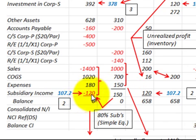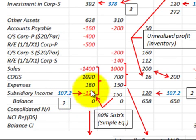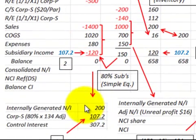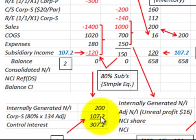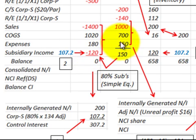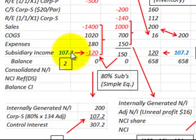Using the sophisticated equity method, the $107,200 is what we use on our trial balance and what we eliminate for intercompany transactions. With the simple equity method we worked off $120,000. The key difference is that the simple equity method takes a percentage of the subsidiary's income without any adjustments, whereas the sophisticated equity method makes adjustments to the subsidiary's income before recording it.